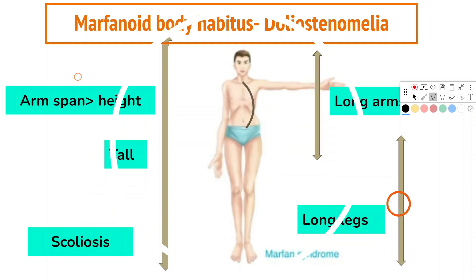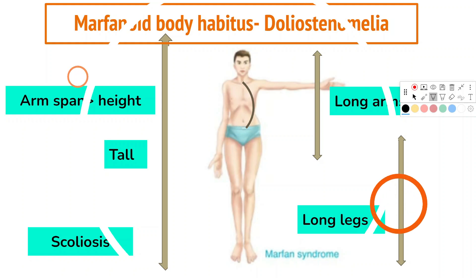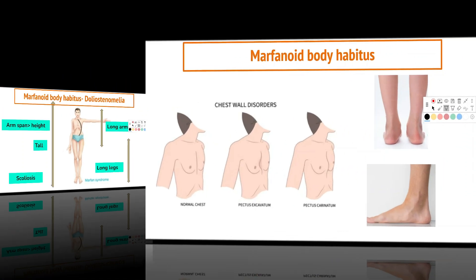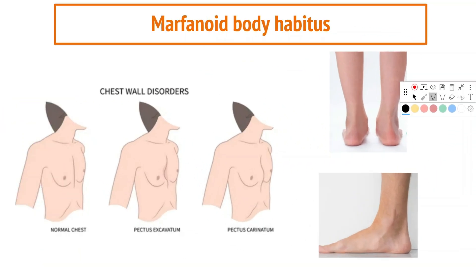Increased linear growth of long bones is a common finding, generally resulting in tall stature with long limbs. The torso-to-leg length ratio is often reduced, while the arm span to height ratio may be increased — arm span greater than height — as well as tall stature, long arms, and long legs. Thoracolumbar scoliosis, as seen in this image, is also commonly present.